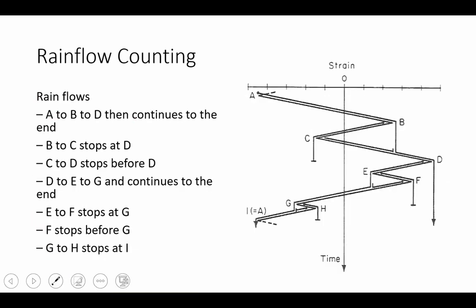We can describe that in more elaborate language here, but let's just graphically see how it works. So we have that same diagram, and we see that we have rain that flows from A to B. It flows down the shelf to D. And then it continues until the end of life, all the way for infinite time. This is going to create a hysteresis loop.